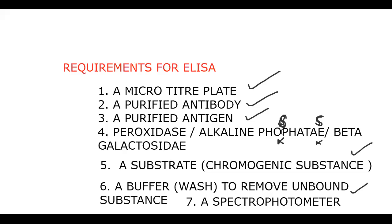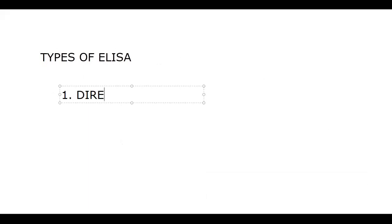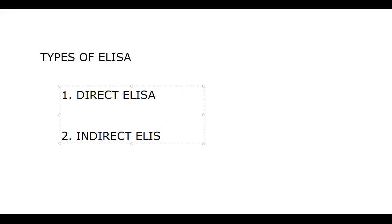Now let us see the types of ELISA, then we get into the individual explanation. There are two types of ELISA. Number one: direct ELISA. Number two: indirect ELISA.